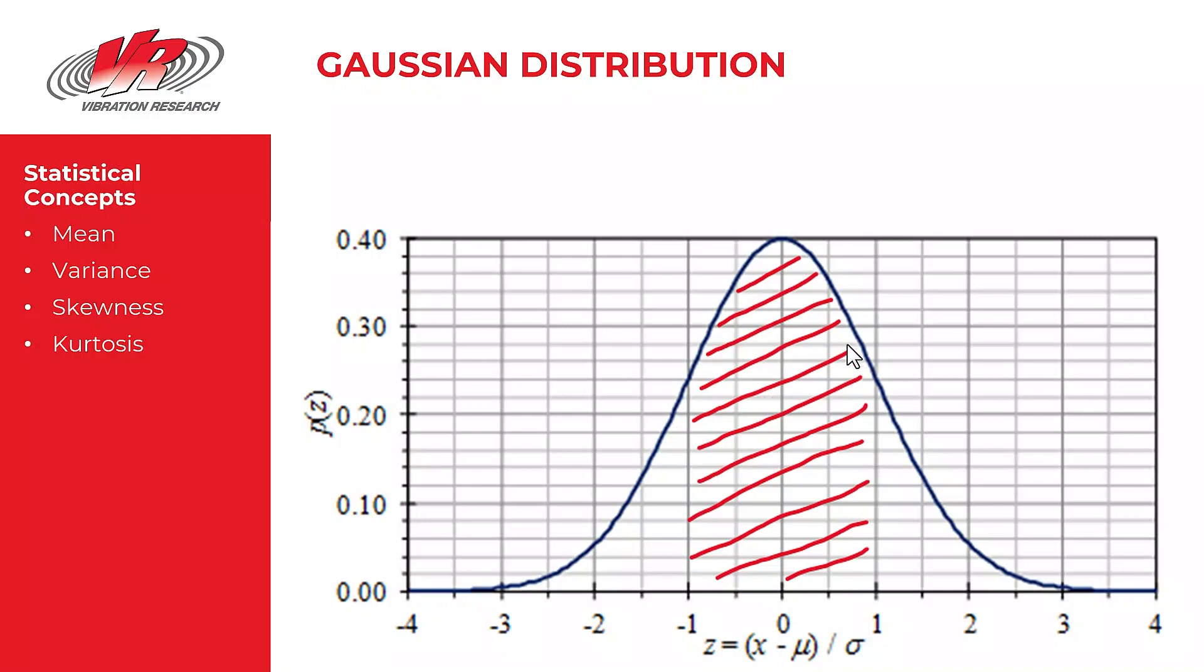And a truly Gaussian distributed set of data will have 68.3 percent of its points, or in our case of vibration data, 68.3 percent of the vibration peaks are going to land within one standard deviation of the mean.